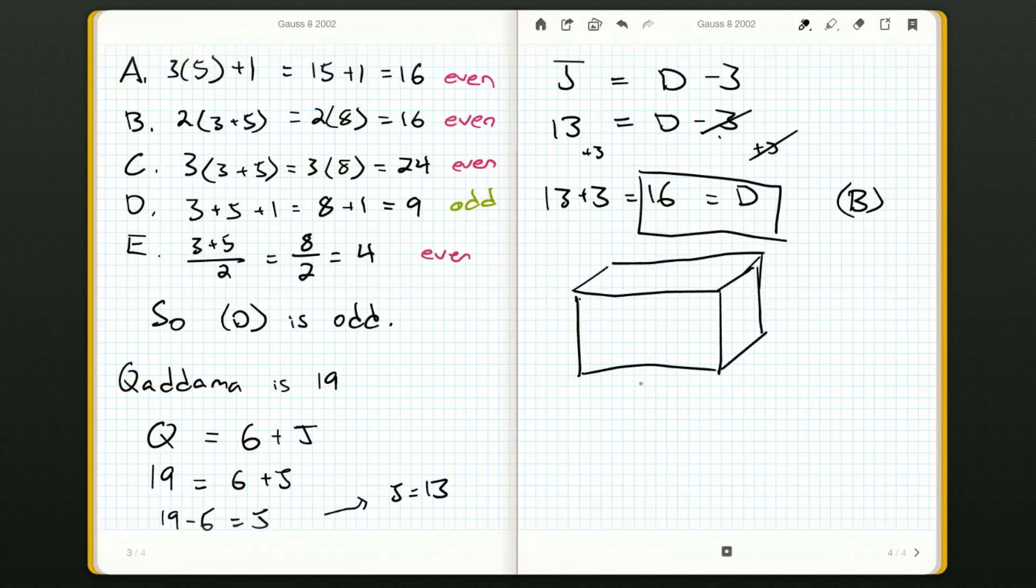I have a box here and I can label things like length, width, and here we have height. Volume is equal to length times width times height. If you didn't know that, this question would be quite difficult to do.